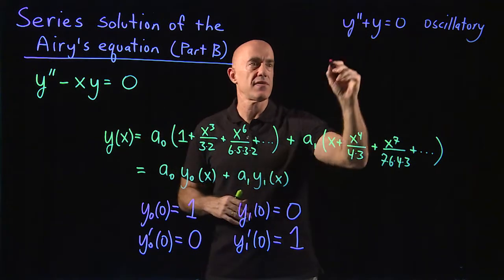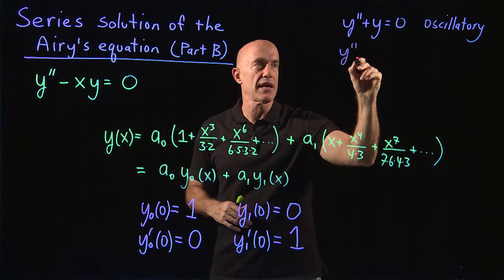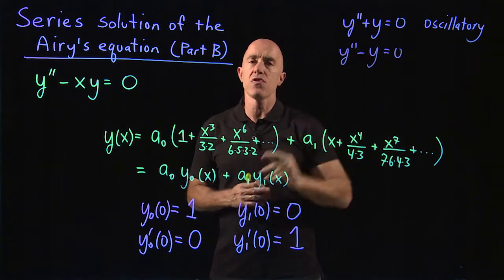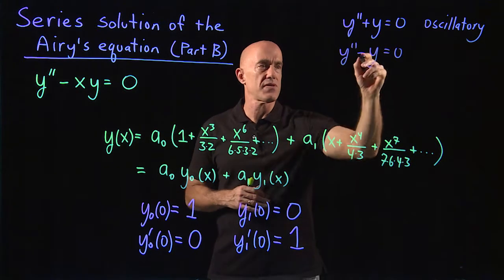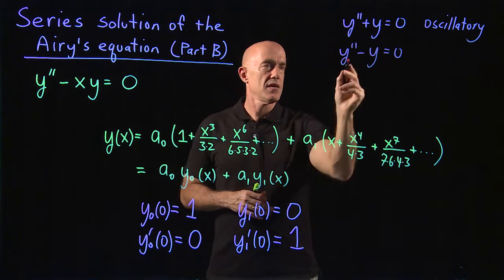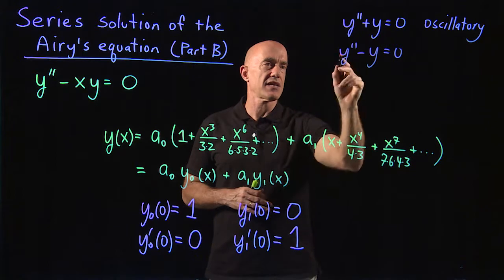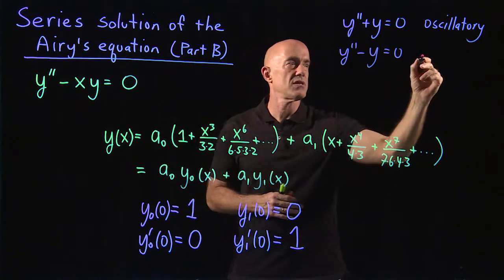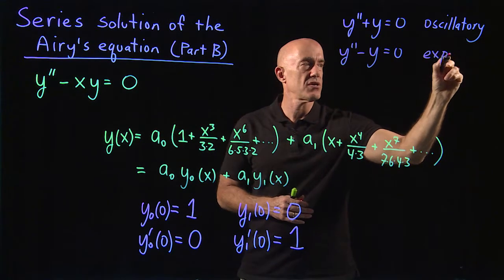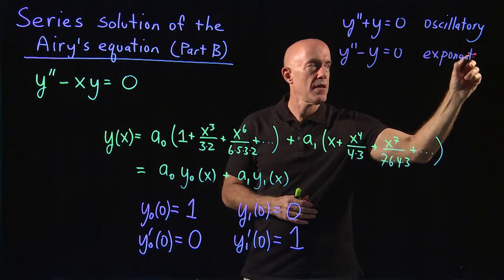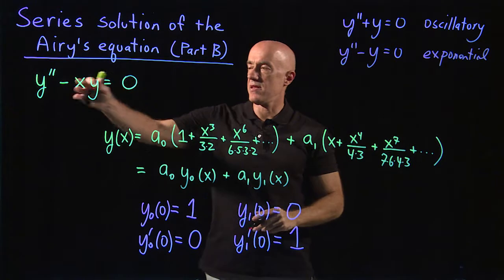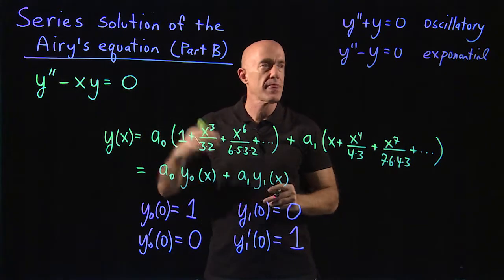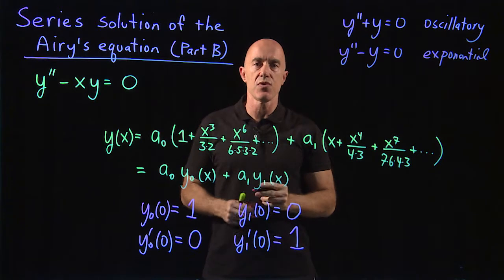If x is positive, the equation would look something like y double prime minus y equals 0. The coefficient is varying, but the sign is correct. This type of equation has exponentially growing and exponentially decaying solutions, so this is exponential. And what you see in the solution, the numerical solution of the Airy equation, is the exponentially growing solution.